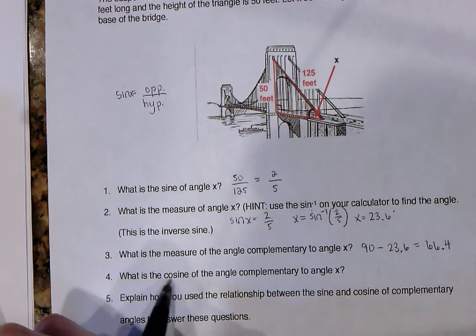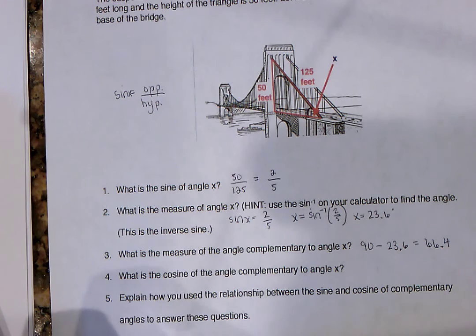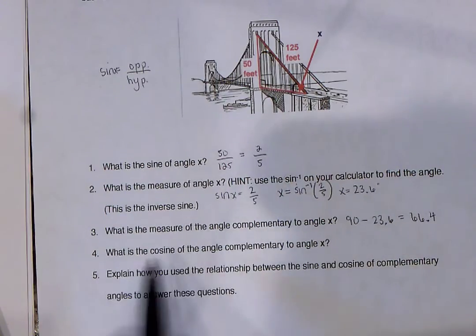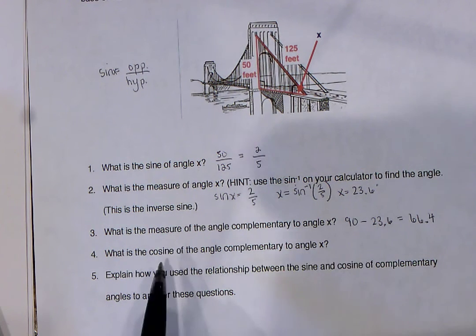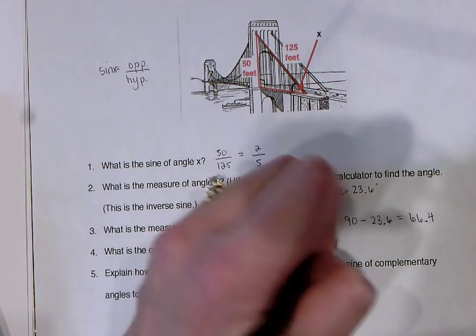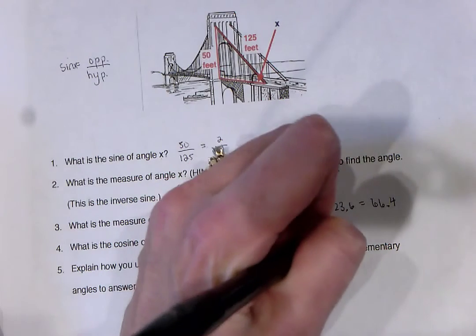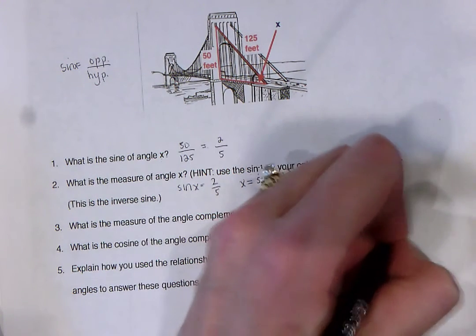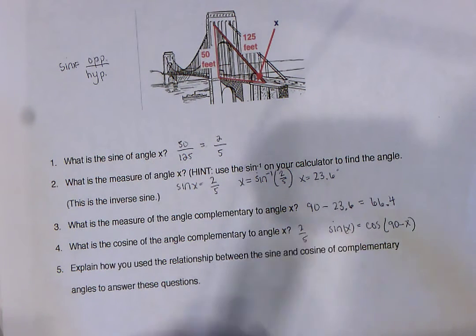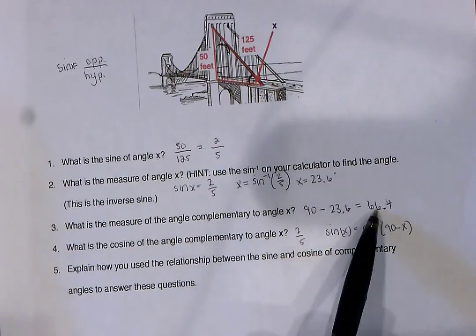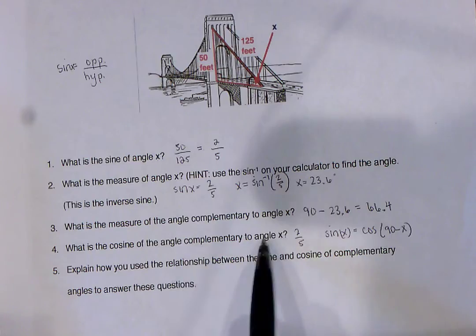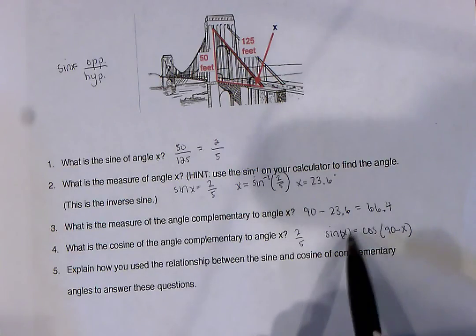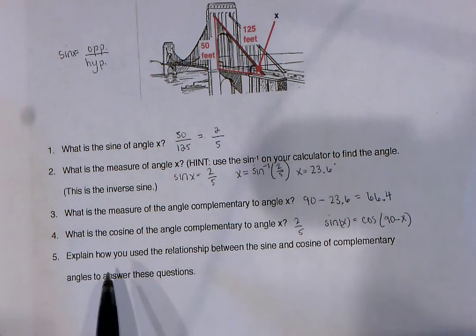It says here, what's the cosine of the angle complementary to angle x? Yesterday, remember, we talked about that. If you know that the sine of x is 2/5, then what's the cosine of the angle complementary to that? It should still be the same, 2/5. The reason we know that is because the sine of x would be equal to the cosine of 90 minus x. We know the sine of x is 2/5, and they just asked us for the complementary angle to that, which is 66.4. What's the cosine of the angle complementary to x? What's the cosine of 66.4? It should be equal to the sine of x, which is 2/5.